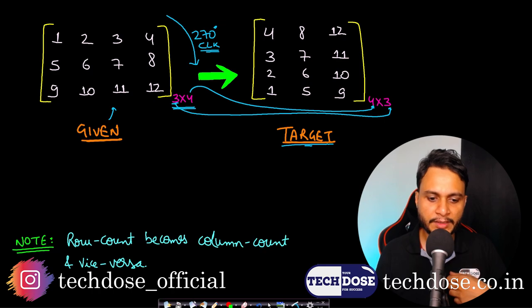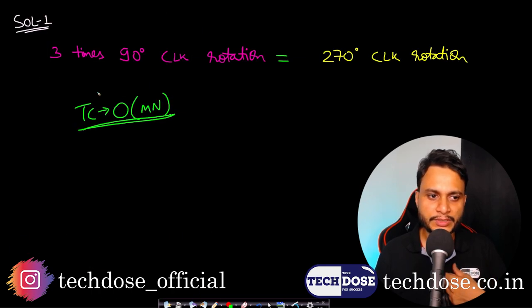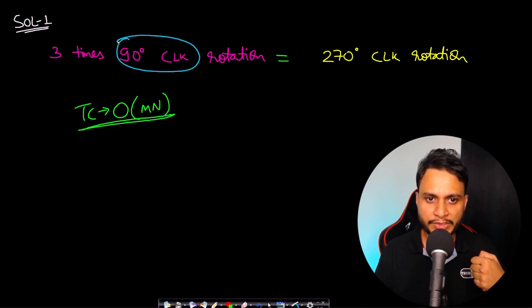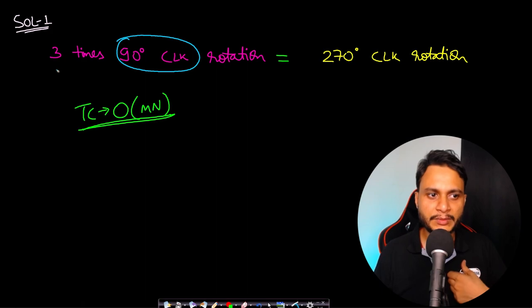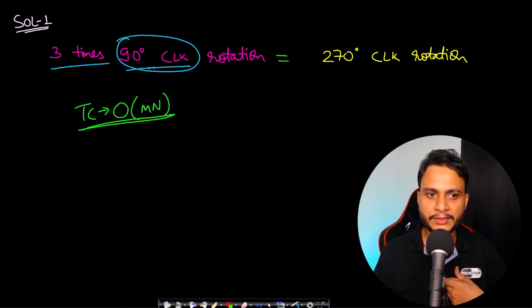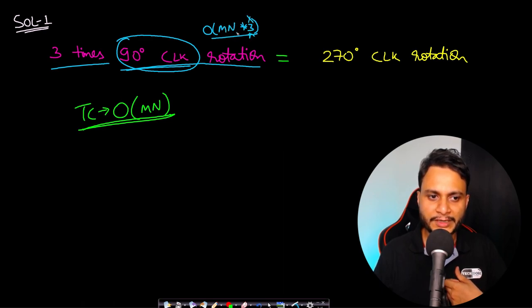One possible solution is to apply the code for 90 degrees clockwise rotation and repeat it three times, giving you the 270 degrees clockwise rotation. The time complexity to get 90 degrees clockwise rotation is O(mn), and even if you repeat it three times, three being a constant we drop it off, so the total time complexity remains O(mn).